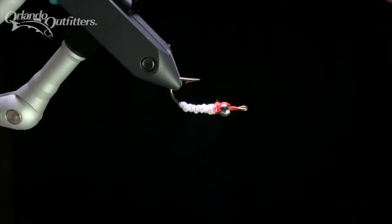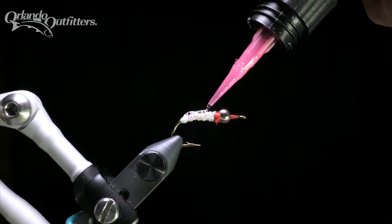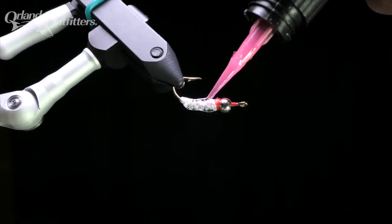Apply UV resin from the back half of the bead all the way to the end of the sparkle braid. This is much easier with a rotary vise, which will allow you to spin the fly, helping the resin to spread out and keeping it even.